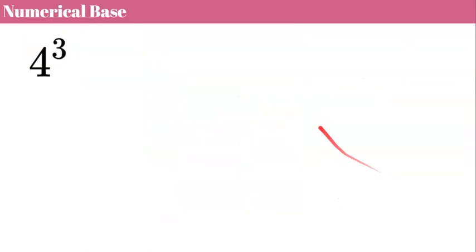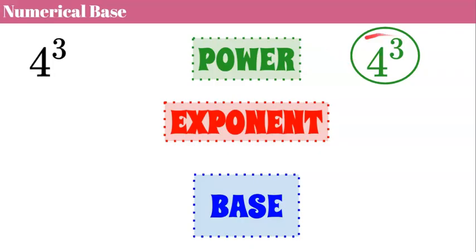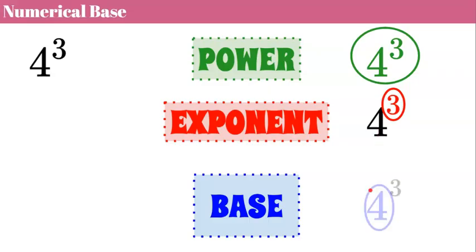Let's look at a numerical base. When we're given four cubed, or four to the third power, the power is four cubed — the entire numerical expression is the power. The three is the exponent, which tells us to take our base of four and multiply it by itself three times. Our base is four — that is the factor that's going to get repeatedly multiplied.